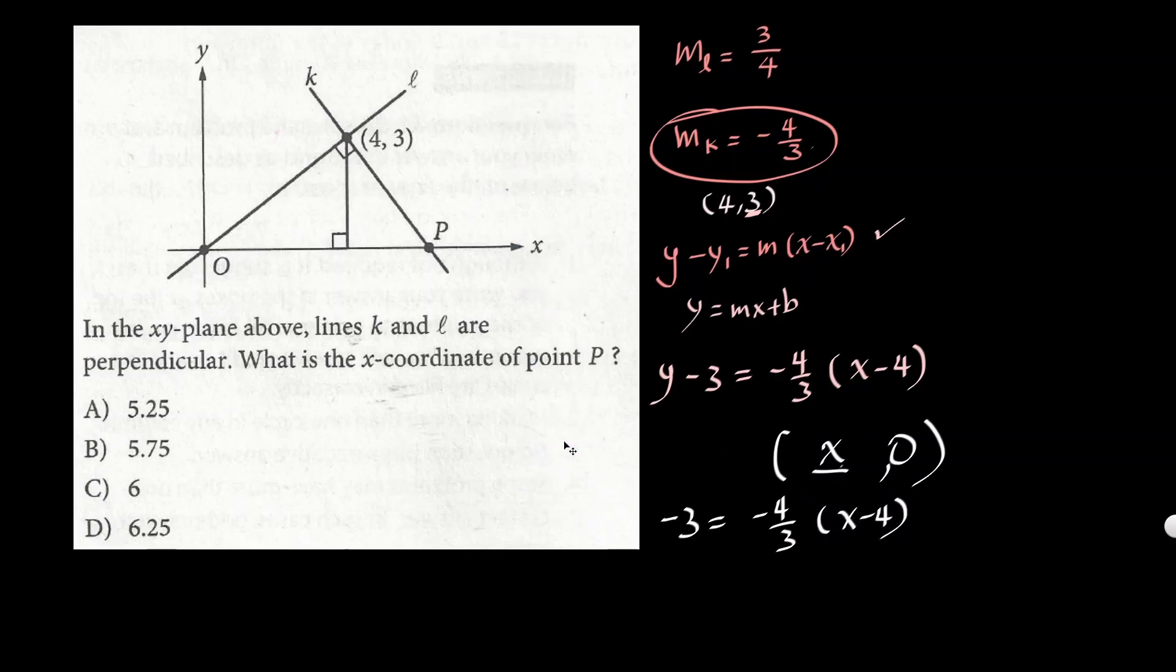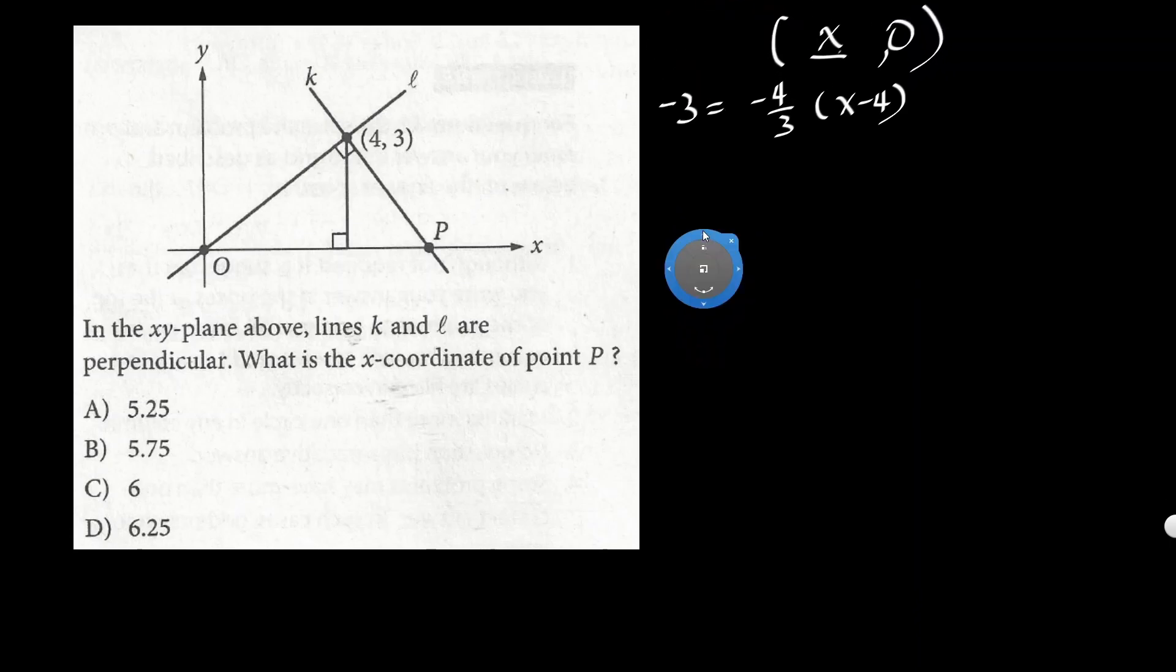To get rid of the -4/3, I'm going to multiply by -3/4 on both sides. These 3s and 4s cancel, and the negatives cancel. On the right side I have x - 4, and on the left side that's going to be positive 9/4.